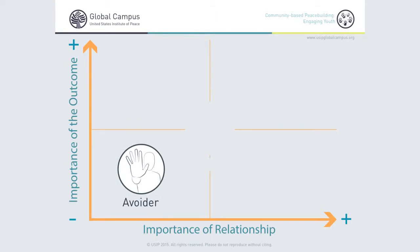If we go down and look at where relationship and outcome come together at the axes, we have avoiding. Somebody who chooses to avoid a conflict in a particular moment is less concerned about the relationship and also less concerned about the outcome — both are not important enough to engage in a conversation about it.